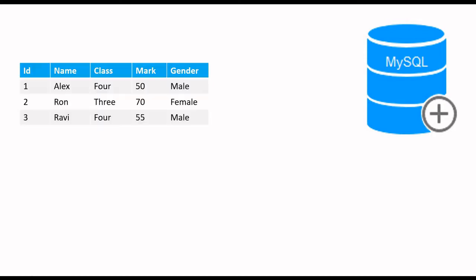Hi friends. We will create one pandas data frame and then using SQLAlchemy we will connect to MySQL database and insert the data frame data to a MySQL table. Then we will read one MySQL table data, change the data and again insert it into MySQL database table.